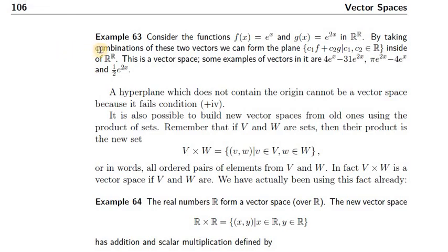To amplify on the previous example: instead of two vectors in Rⁿ, we can take two vectors in Rʀ — the set of real-valued functions — and take the set of arbitrary linear combinations of those two fixed functions. That set of arbitrary linear combinations does form a vector space; it's closed under addition, closed under scalar multiplication, et cetera. It's not too difficult to prove that such a subset is a vector space once you've proven the big space is a vector space, which we'll discuss in the subspaces chapter.